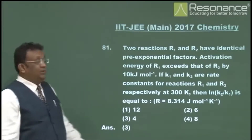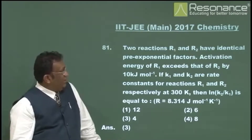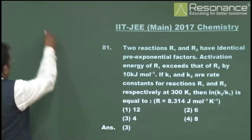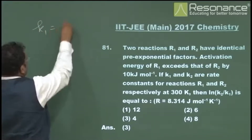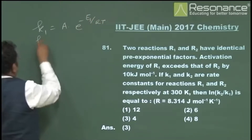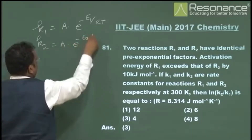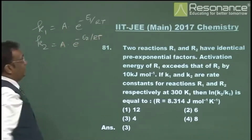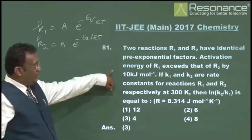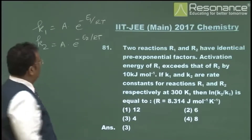The next question involves two reactions R1 and R2 with identical pre-exponential factors. Writing the rate equations: K1 = A·e^(−E1/RT) and K2 = A·e^(−E2/RT), where the pre-exponential factor A is the same for both. The activation energy of R1 exceeds that of R2 by 10 kilojoules per mole.